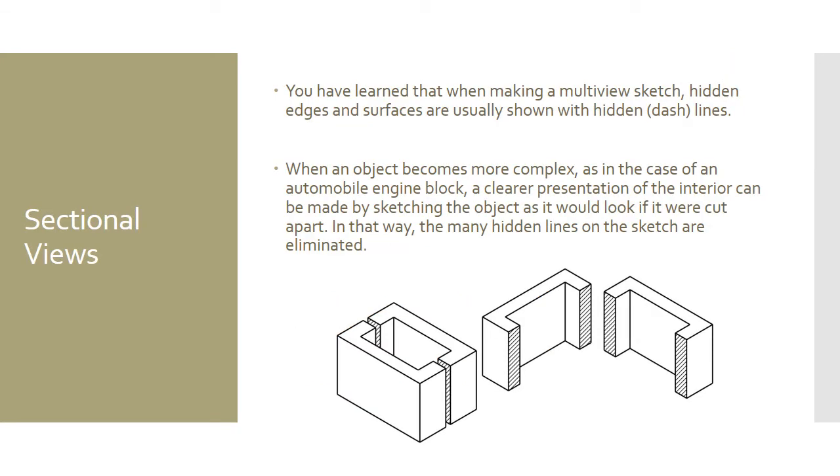We've learned that when you're making a multi-view sketch, hidden edges and surfaces are usually shown with hidden lines, dashed lines. When an object becomes more complex, as in the case of an automobile engine or a valve, we need a clear presentation of the interior. We can do that by sketching the object as it would look if it were cut apart. In that way, the many hidden lines on the sketch are eliminated.